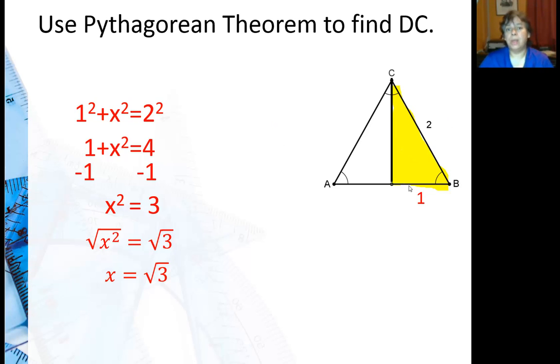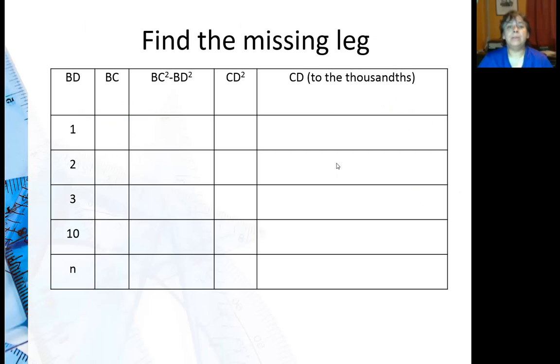So we have 1 as the short leg, square root of 3 is the long leg, and 2 is the hypotenuse. Okay so we're going to go ahead and do a couple more triangles. One thing we've already noticed is that the hypotenuse is twice the leg. So that one's pretty easy to fill in.